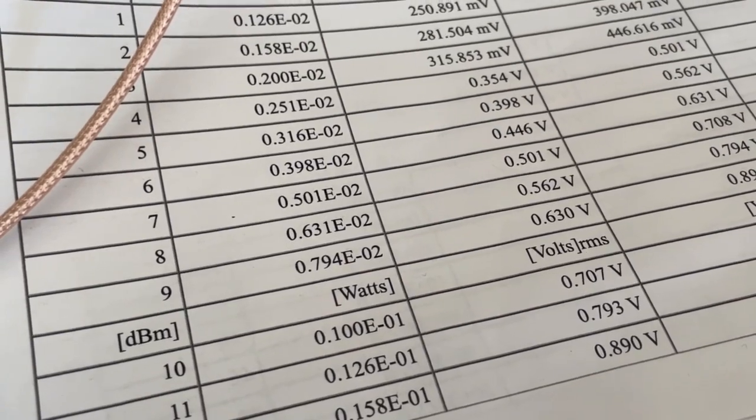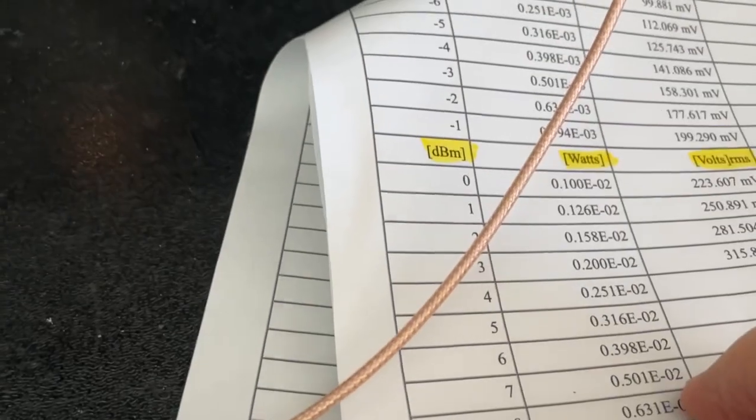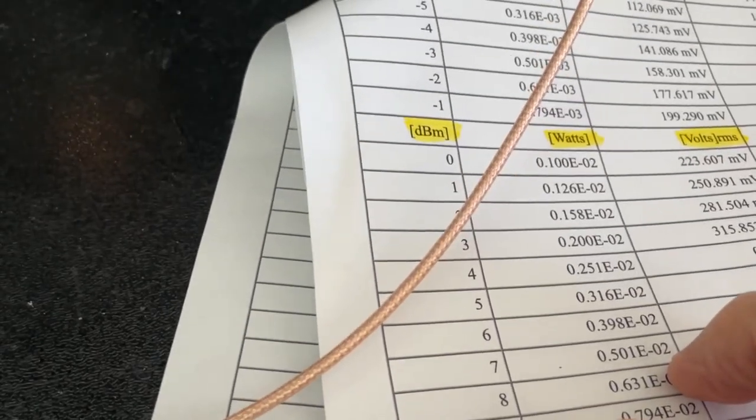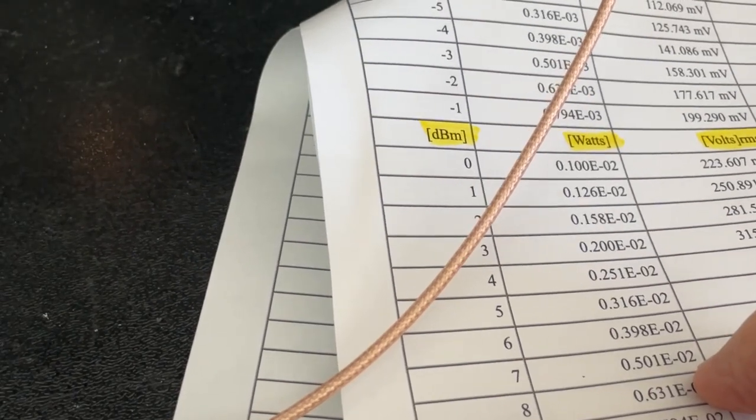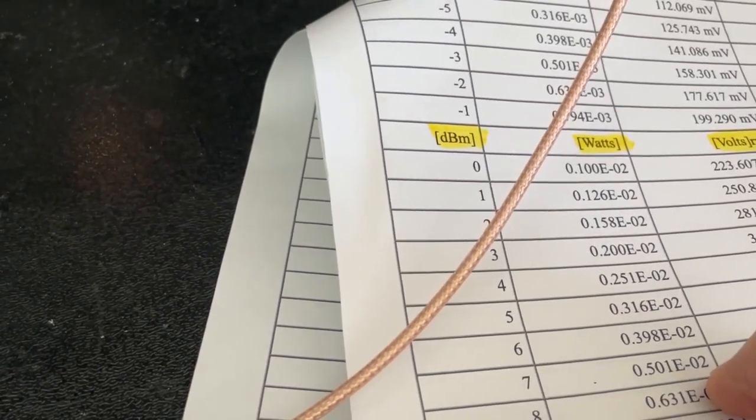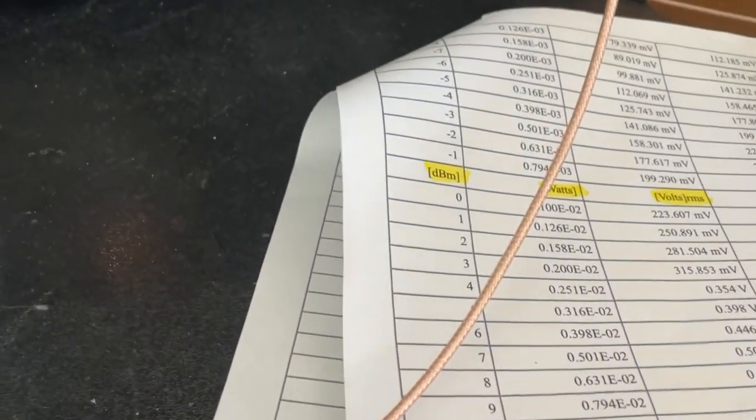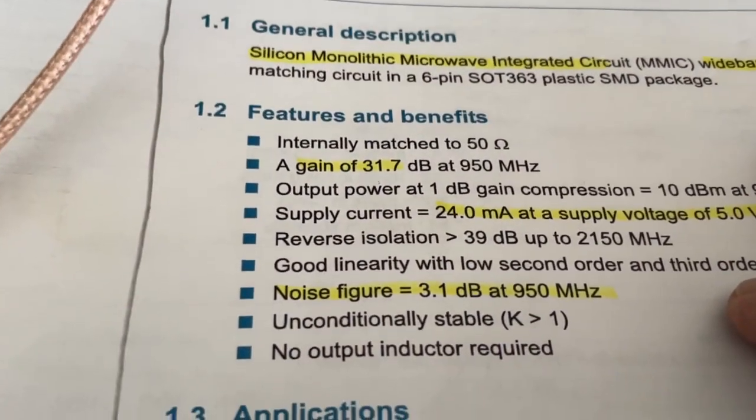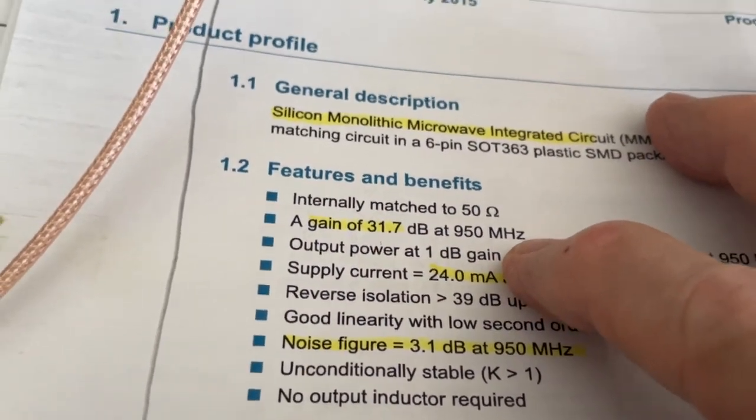So if you add the minus 21 dB to the plus 9 dB, you get 30 dB of gain. That's roughly what the amplifier, what they claim here. They say that it's a gain of 31.7 dB at 950 megahertz.